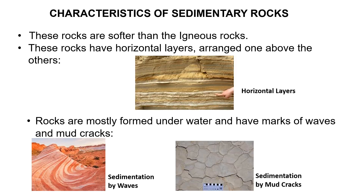Now we will look at the characteristics of sedimentary rocks. These rocks are softer than igneous rocks. They are arranged in horizontal layers, as you can see in the picture provided. Due to the pressure exerted by the upper layer, the sediments are arranged one above the other, and cementing of the layers happens.